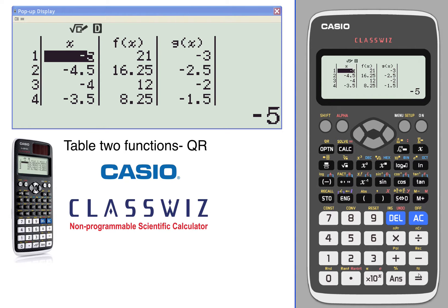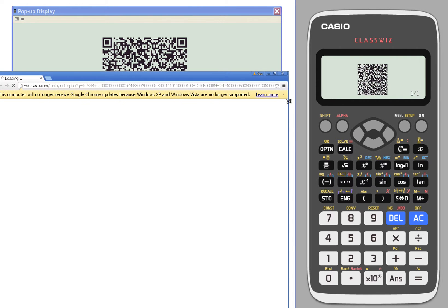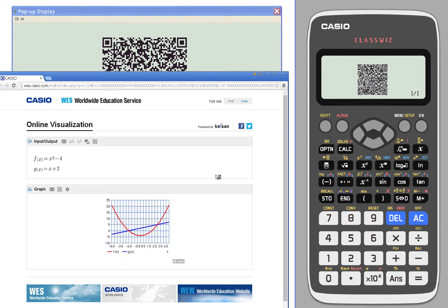So there we have our table. I want to have a QR code to generate a graph, so I press shift and QR which is option, generate my QR code. I can scan that on my smartphone or tablet.